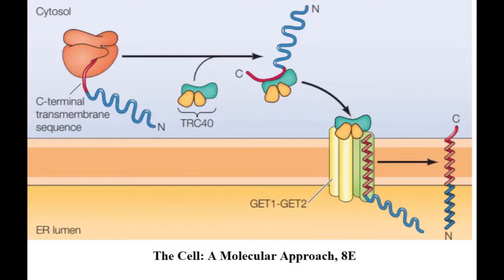The last process covers proteins with a transmembrane sequence at the C-terminal that are not recognized by SRP, called post-translational insertion of a protein with a C-terminal transmembrane sequence. These proteins are recognized post-translationally by the targeting factor TRC40, which brings them to the GET1/GET2 receptors. They are inserted into the endoplasmic reticular membrane with their short C-terminal domain on the cytosolic side.